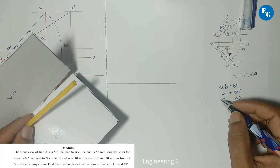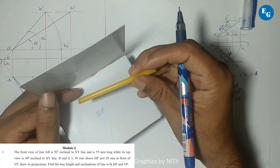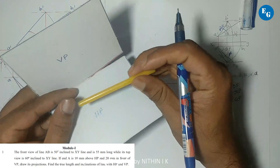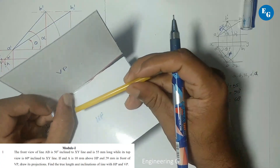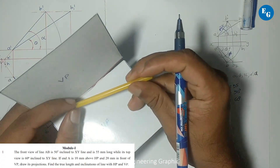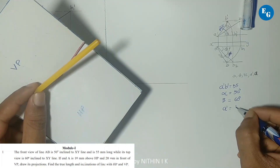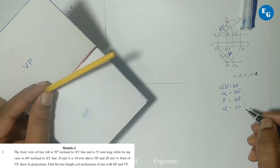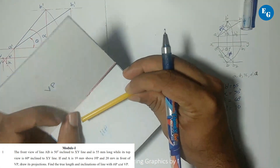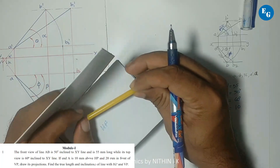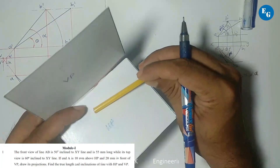End A is 10 mm above HP and 20 mm in front of VP. The above distance is 10 mm and in-front distance is 20 mm. A dash equals 10 mm from XY line. At the same time, A is 20 mm in front — that distance is 20 mm. The top view A is a small 'a', located 20 mm below XY line.